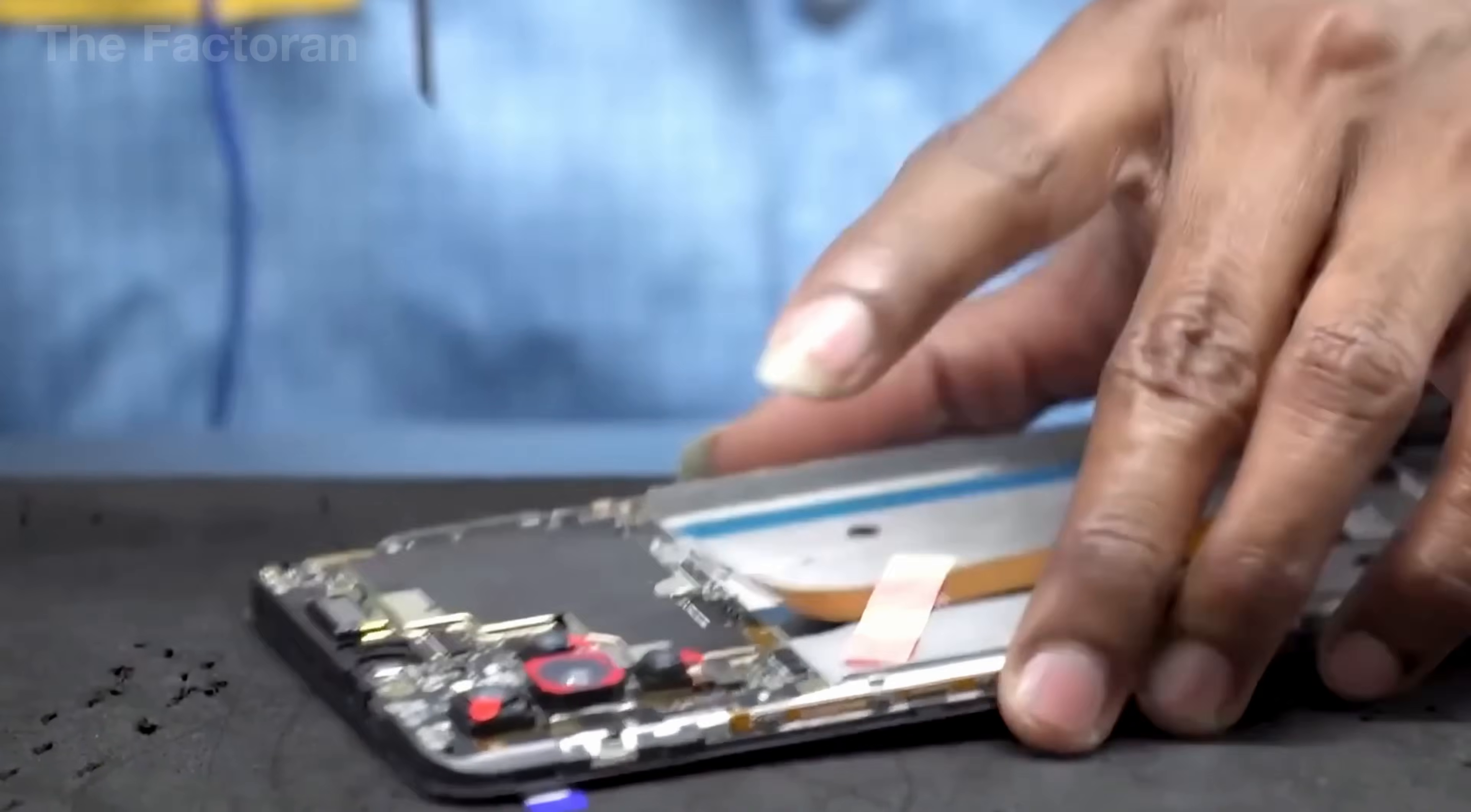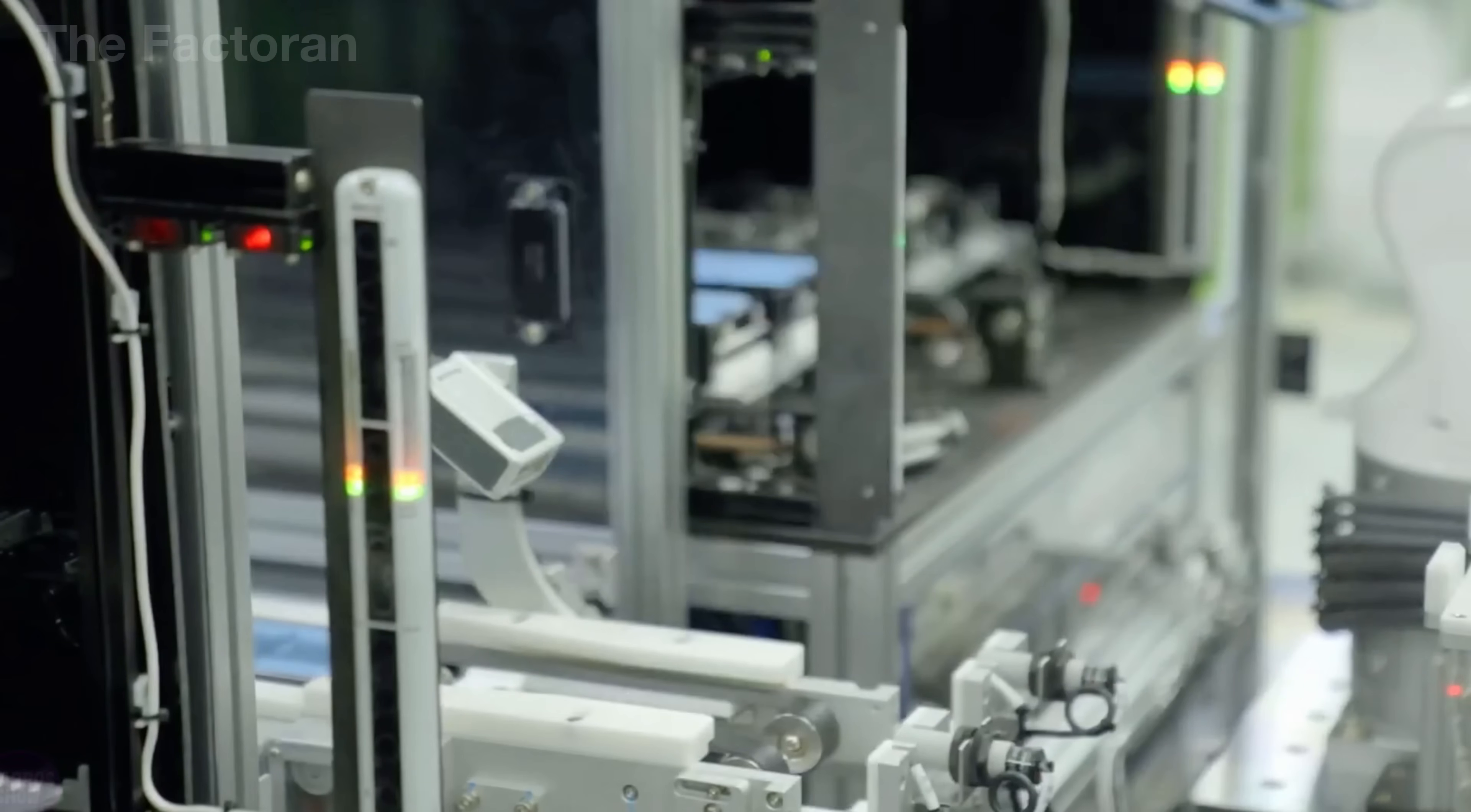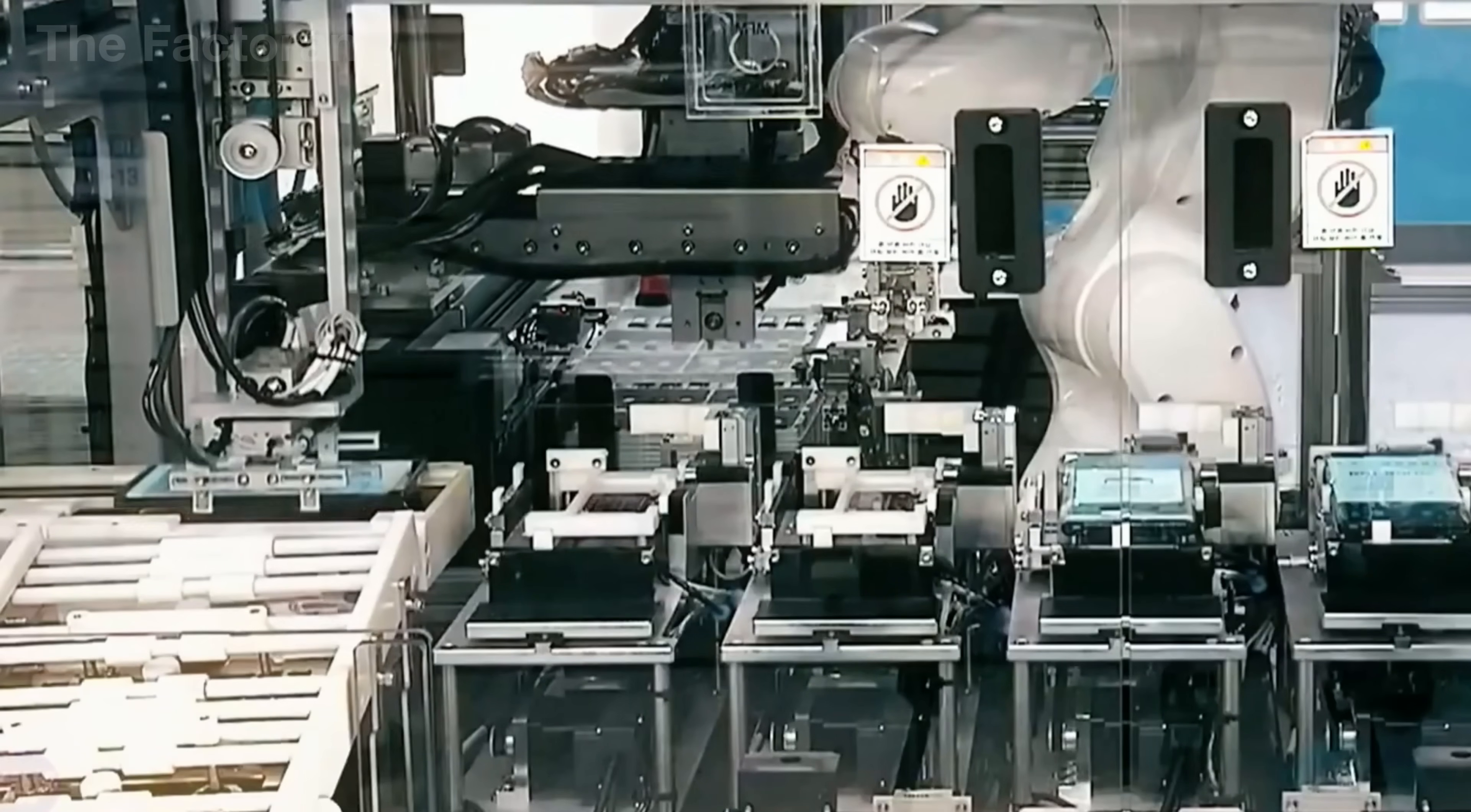Observing the entire assembly line, it becomes clear that every iPhone is the result of a delicate orchestration between mechanics, automation, and quality control. Every action, every connection matters, and even the smallest error can render the entire device inoperative. This is a testament to the meticulous craftsmanship, scientific rigor, and cutting-edge technology that lies behind the smartphones we use every day.